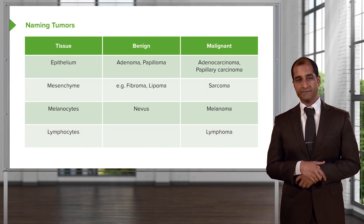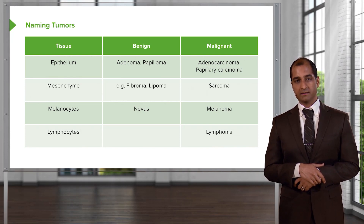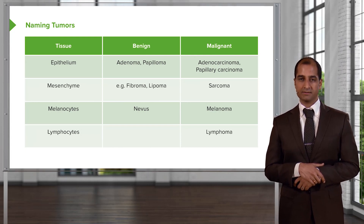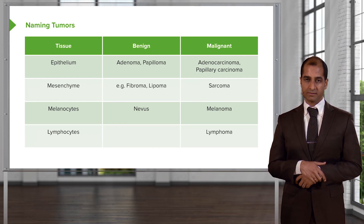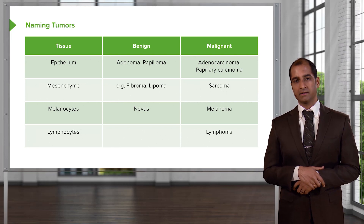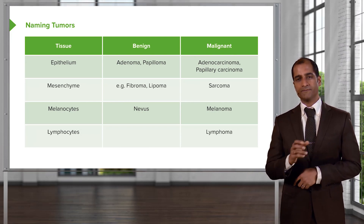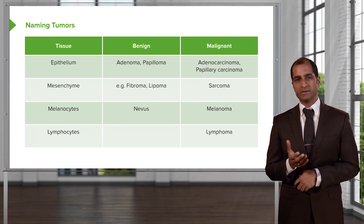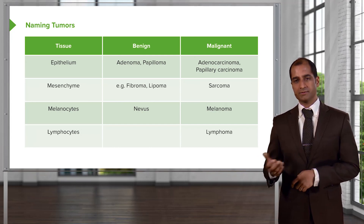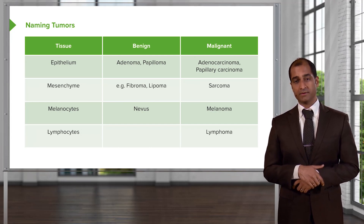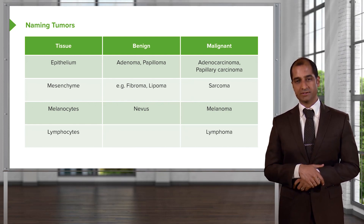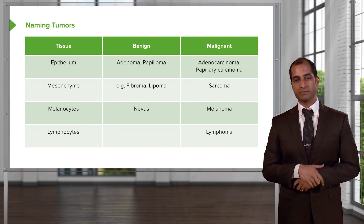Lymphocytes: if you have a cancer originating from the lymph node, you call this a lymphoma. Examples include Hodgkin's and non-Hodgkin's lymphoma. Our focus in WBC pathology and hematology will be more specifically on non-Hodgkin's lymphoma, because that's an area where students feel confused. I'm going to walk you through exactly what you need to know — Burkitt's lymphoma, diffuse large B-cell lymphoma, follicular lymphoma, hairy cell, and all the different types of non-Hodgkin's lymphoma.